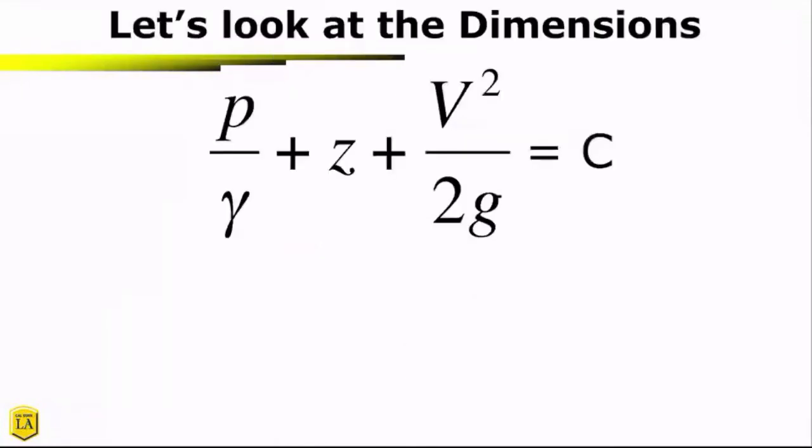So let's look at the dimensions. So P over gamma, what is that? Not really sure, but for sure I know the dimensions of Z. What is the dimensions of Z? Remember that's FLT, MLT. The dimensions are length. Now, in order for us to have dimensional homogeneity, that means that each of these components must also have dimensions of length.